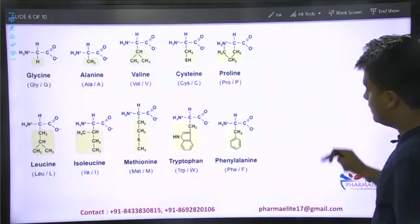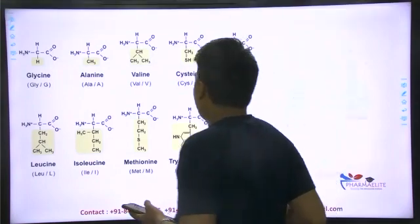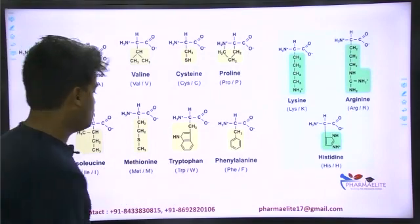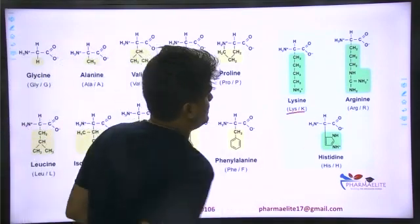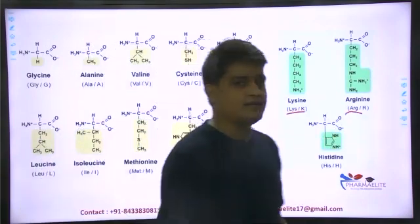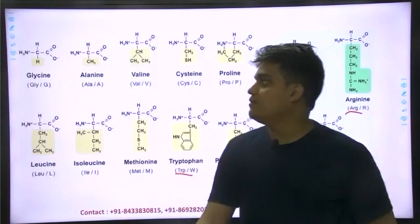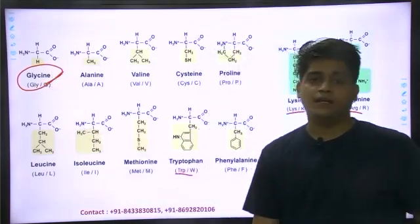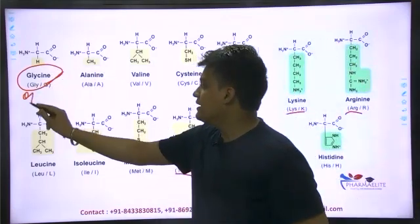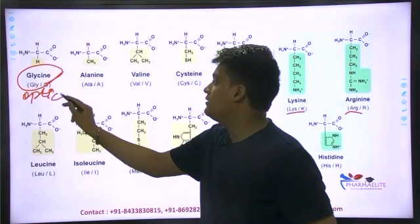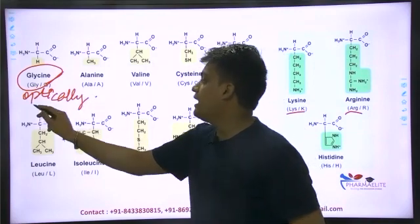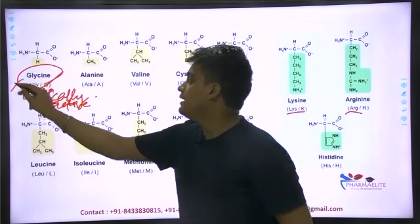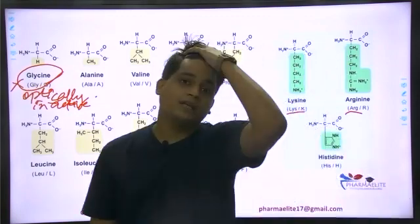If we look at the structures comparatively, there are similarities in all of them — with some exceptions. In nomenclature: tryptophan is W, glycine is G, arginine is R. Rest of the amino acids follow expected patterns. One important point: glycine is the only amino acid which has no chiral carbon, no asymmetric carbon — therefore it is optically inactive. This question has come many times and will likely appear again.